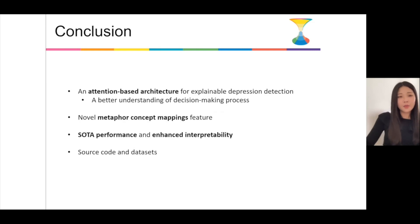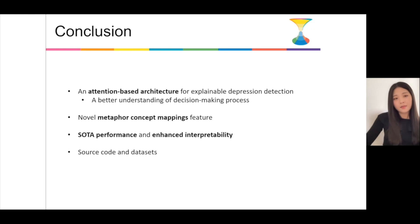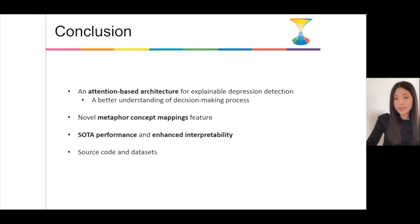In summary, in this work we proposed an attention-based architecture for explainable depression detection on Twitter to better understand the decision-making process for the task. Second, we introduced a novel feature called metaphor concept mappings into our model for depression detection. Next, our model advanced the state of the art in terms of classification evaluation metrics, and it produced results which can be interpretable by humans.